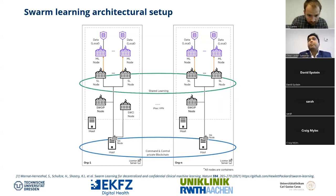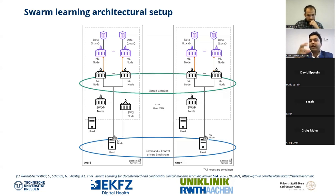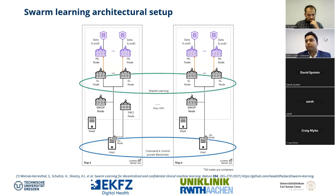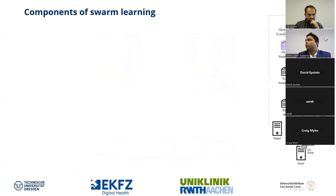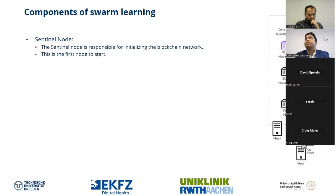The architecture supports n organizations. Each organization contains different nodes — dockerized containers — that each have a specific role. Here we see two SL nodes, meaning two training centers within one organization, though you can have any number. I'll explain the contribution of each node type. The network node, or SN, is important: the sentinel node initiates the blockchain network and is always the first to start.